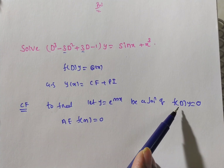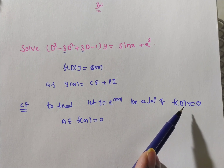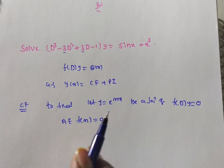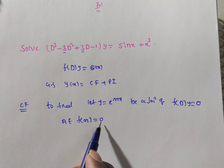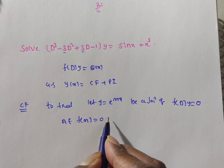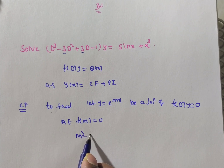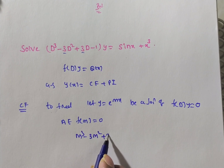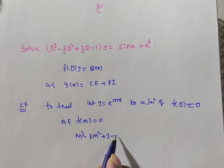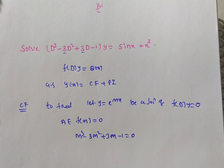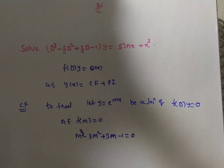While finding the complementary function, we take Q(x) as 0, giving f(D)·y = 0. Introducing y = e^(mx), we get f(m) = 0. So the auxiliary equation here is m³ - 3m² + 3m - 1 = 0. We now need to find the roots of this cubic polynomial.